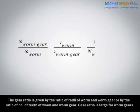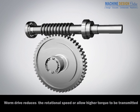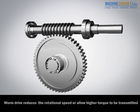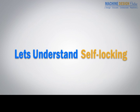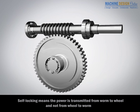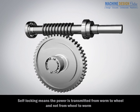Gear ratio is large for worm gears. Worm drive reduces the rotational speed or allows higher torque to be transmitted. Self-locking means the power is transmitted from worm to wheel and not from wheel to worm.